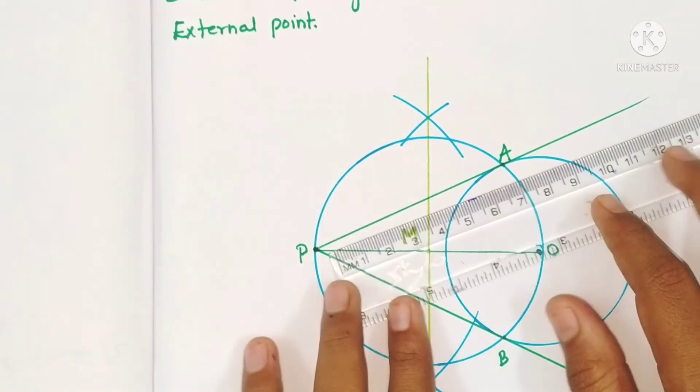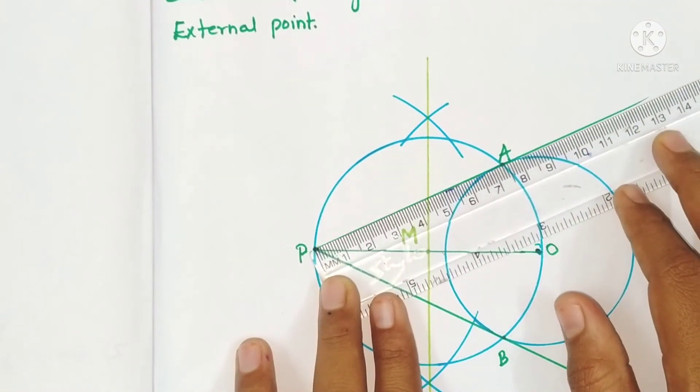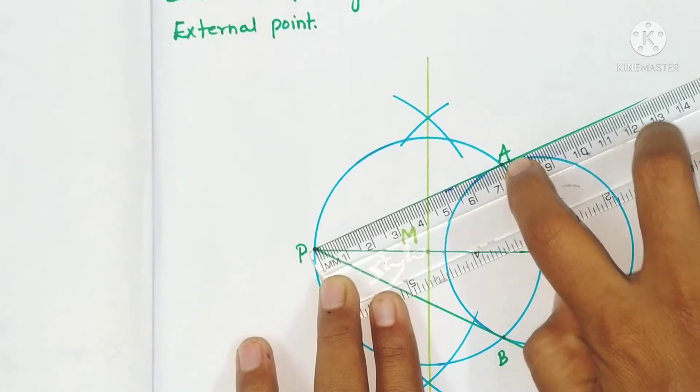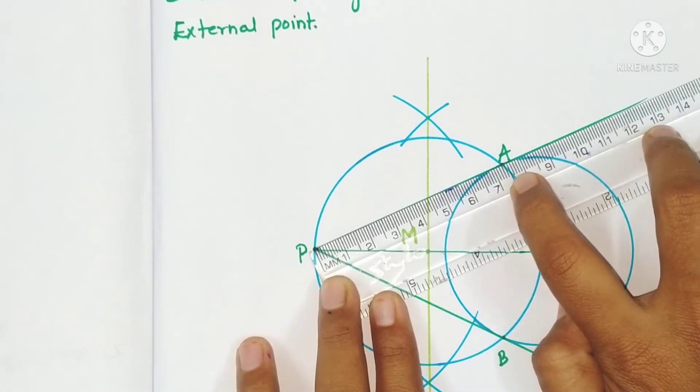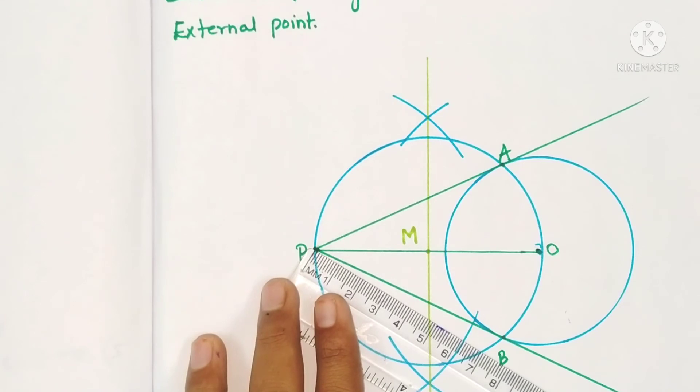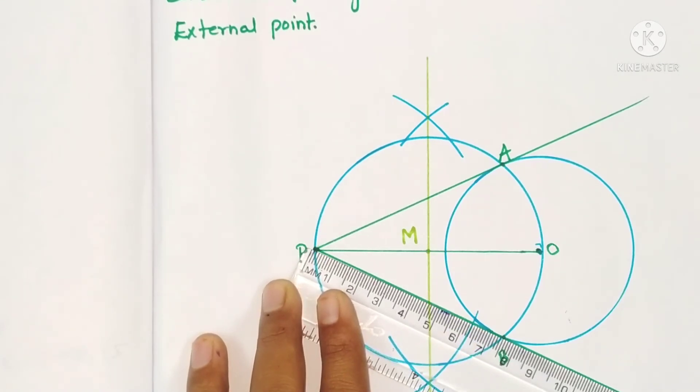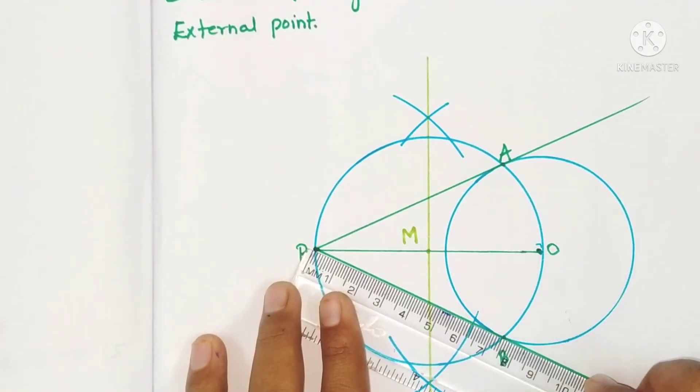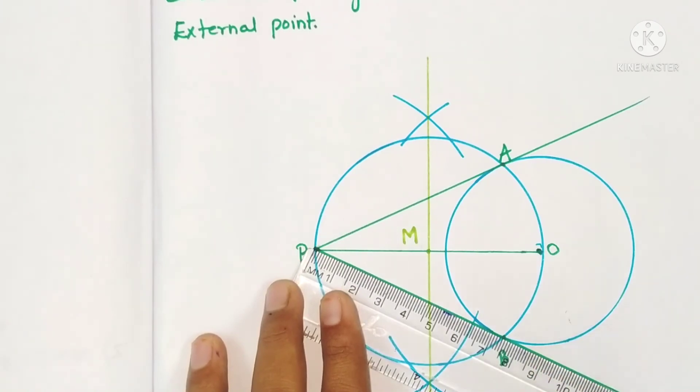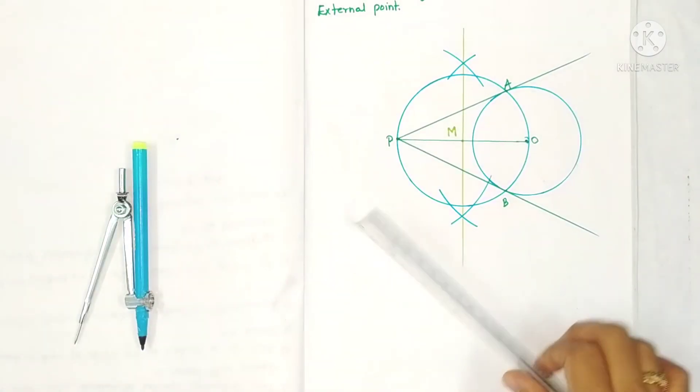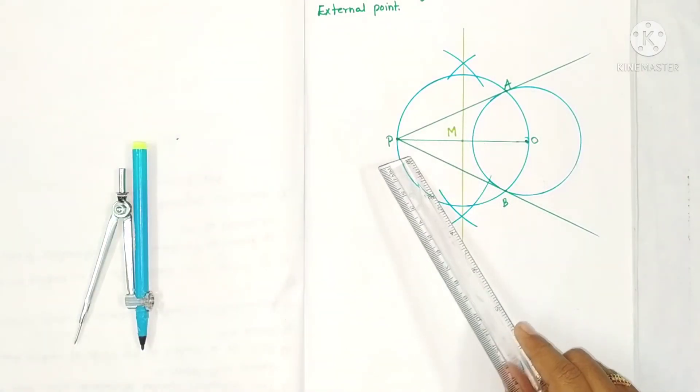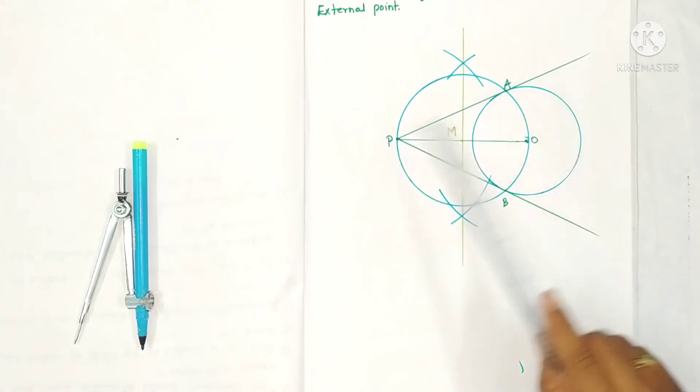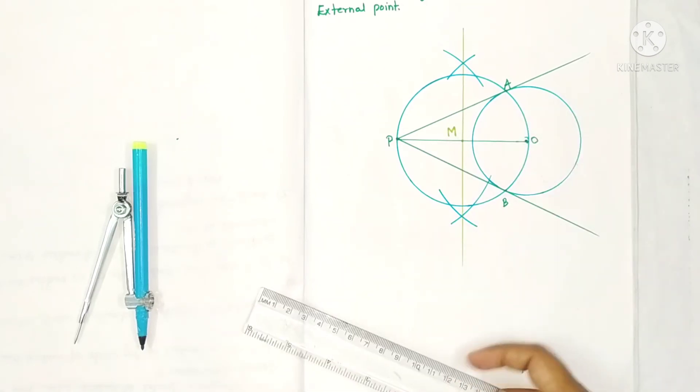Now just measure this—how much? This is 7.4, right? So again, if we measure this, it is also 7.4 centimeters. So we can conclude from an external point we can draw two tangents to a circle of equal length.